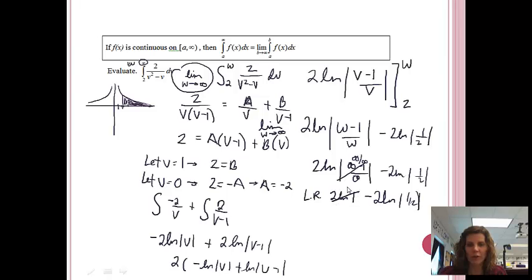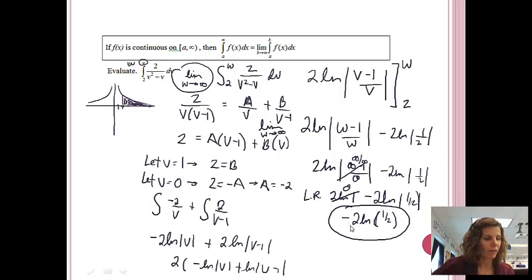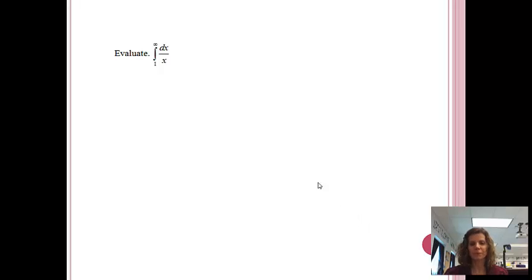Well, we know that the natural log of 1 is 0. So I actually just end up getting negative 2 ln of 1 half. I actually could just make parentheses because 1 half is positive already. So that is my actual answer, negative 2 ln of 1 half. You might be thinking, oh, that gives you a negative number. Well, actually, it doesn't because the natural log of 1 half is already a negative number.